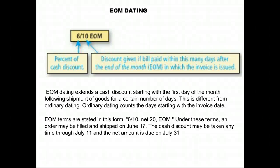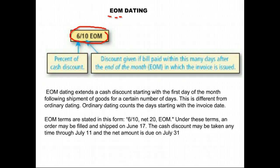Ordinary dating contrasts with end of month dating. EOM stands for end of month. It has a similar look — you'll see a 6-10, but notice it has EOM instead of 'net.' What this means is you get a 6% discount.